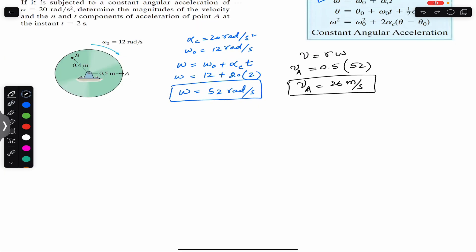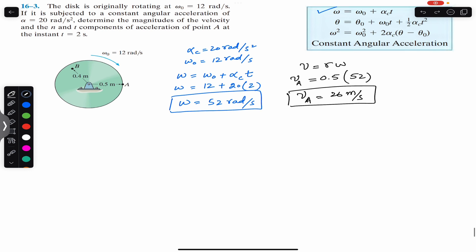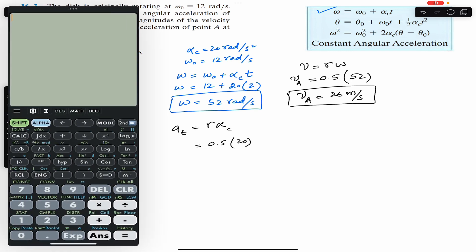Now the tangential component of the acceleration is always equal to r times alpha. Since alpha is constant, we have r equal to 0.5 and alpha equal to 20. So 0.5 into 20 gives us 10. The tangential component of the acceleration is 10 meter per second square.